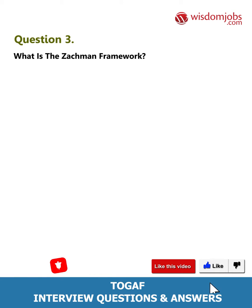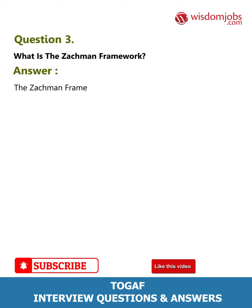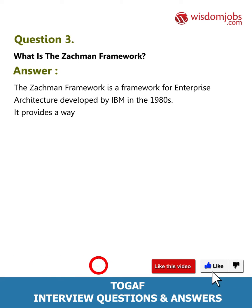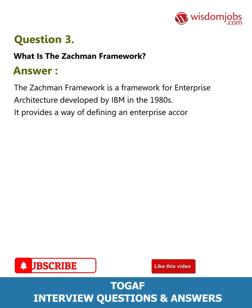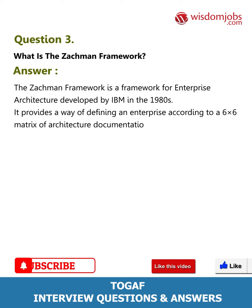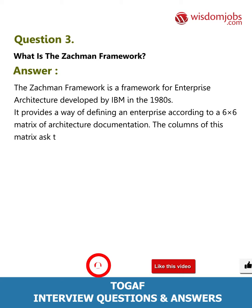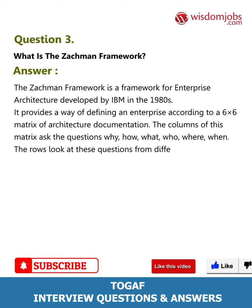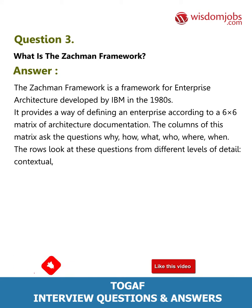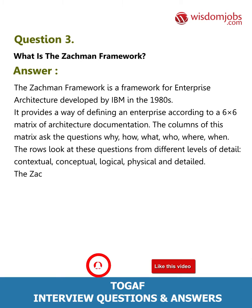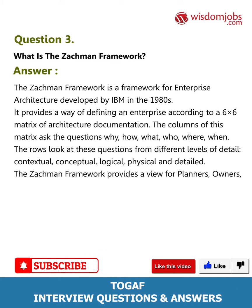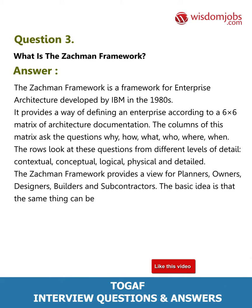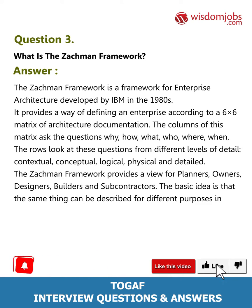Question 3: What is the Zachman Framework? The Zachman Framework is a framework for enterprise architecture developed by IBM in the 1980s. It provides a way of defining an enterprise according to a six-by-six matrix of architecture documentation. The columns of this matrix ask the questions: why, how, what, who, where, when. The rows look at these questions from different levels of detail: contextual, conceptual, logical, physical, and detailed. The Zachman Framework provides a view for planners, owners, designers, builders, and subcontractors.